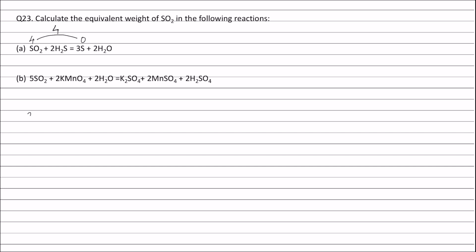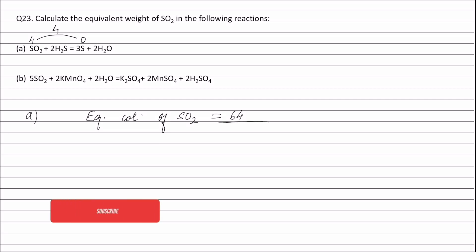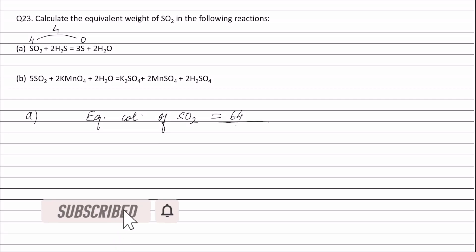Therefore, in equation A, the equivalent weight of sulfur dioxide is equal to the molecular weight of sulfur dioxide — that is 64 — divided by the change in oxidation number per mole, that is 4, and this is equal to 16.